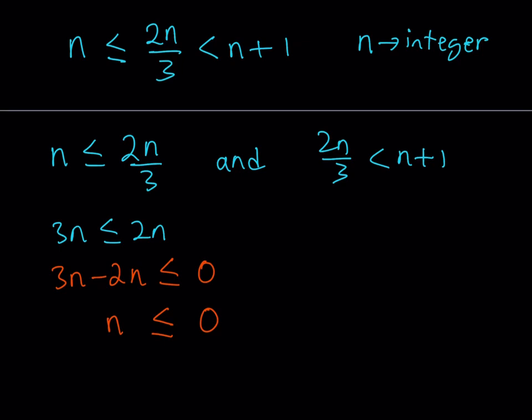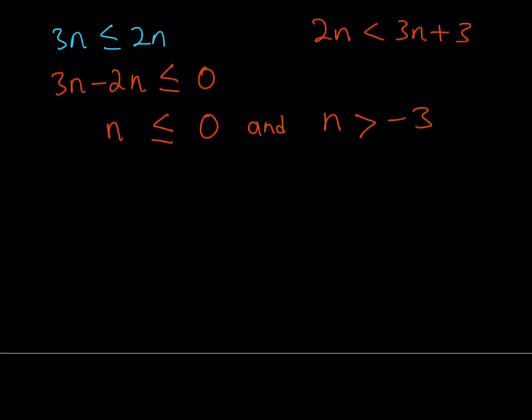For the second inequality, I can just multiply both sides by 3. So that should give me 2n is less than 3n plus 3. And now putting the n's on the same side and putting the 3 on the opposite side, I should be getting something like n is greater than negative 3. But don't forget that these are connected with the word and, which means we're going to find the intersection. And if you look at the intersection of these two inequalities, you're basically getting something like this. n is greater than negative 3, but at the same time, less than or equal to 0. But remember, n is an integer. So there are only a number of integers on this interval, and they are n equals negative 2, n equals negative 1, and n equals 0.